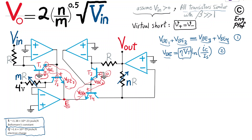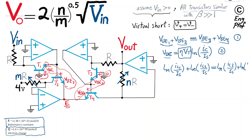Now, since we're summing two logarithms and assuming all currents are positive, I can algebraically combine them. The left side becomes ln(IC1·IC2 / IS²), and the right side becomes ln(IC3·IC4 / IS²).